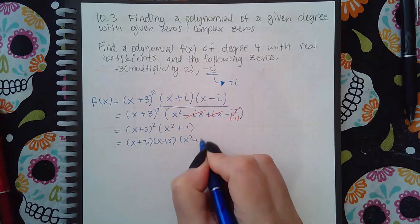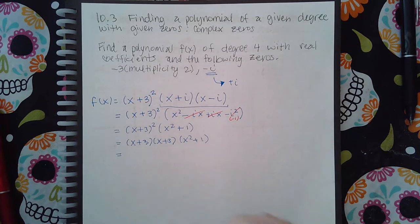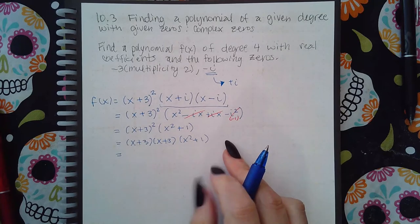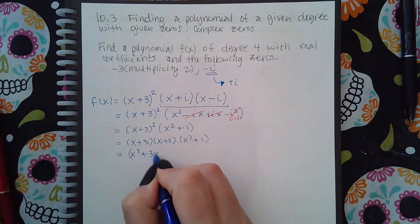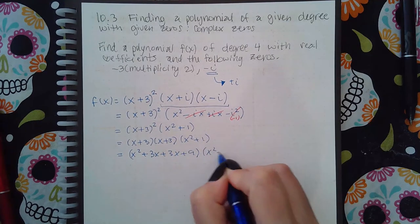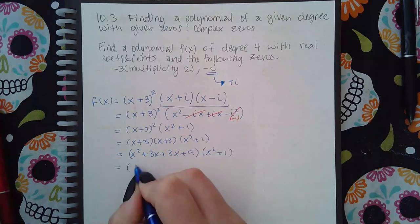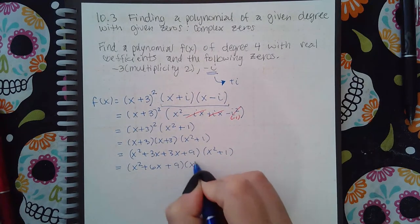My hint was to do the imaginaries first, but now I have to go left to right because these are all real numbers now. So I have (x²+3x+3x+9). Let me clean that up a little bit before I multiply in the (x²+1).